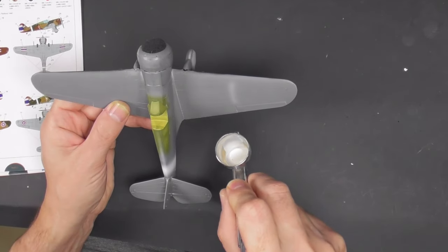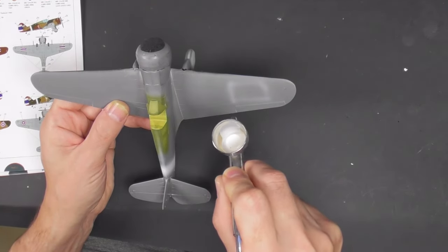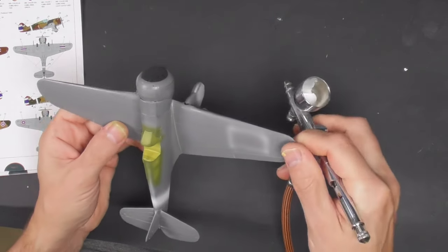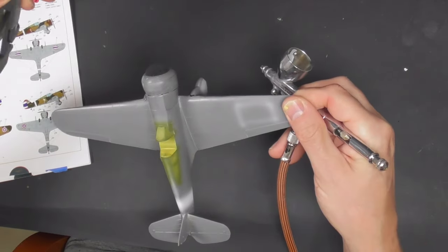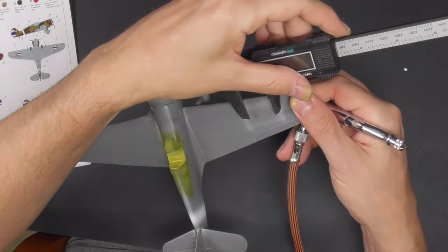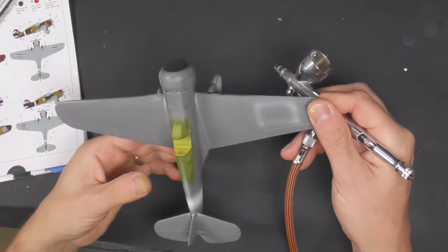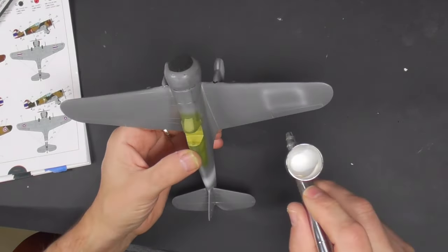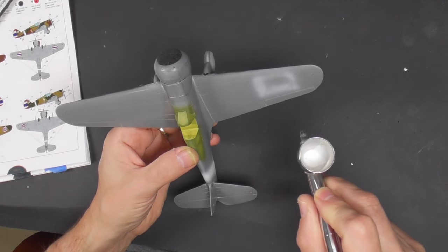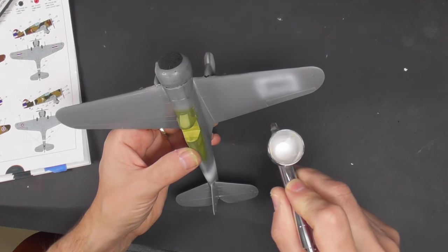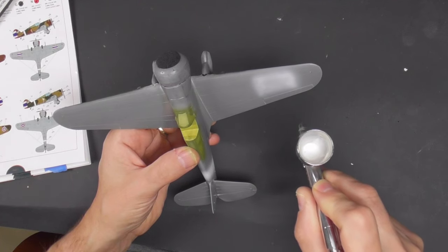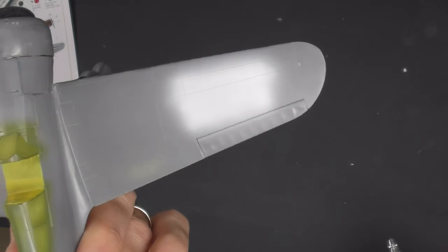I roughly marked out where I wanted the national markings to go and then just using the calipers with the decal, made sure it wasn't too small because that's going to be a right pain if it was. This is MRP white—really thin, really opaque, and goes down a treat.